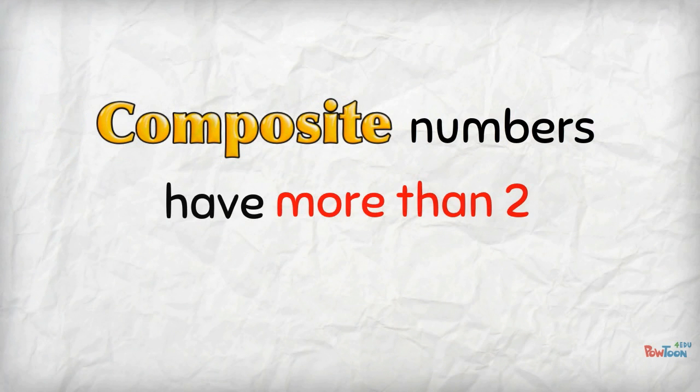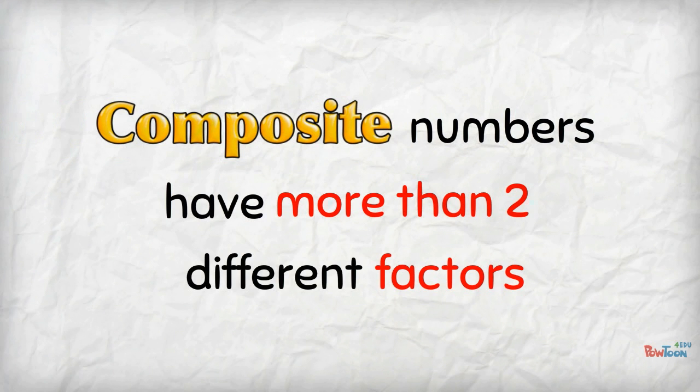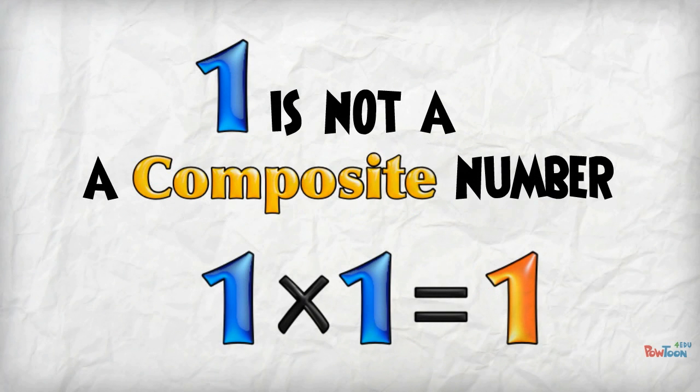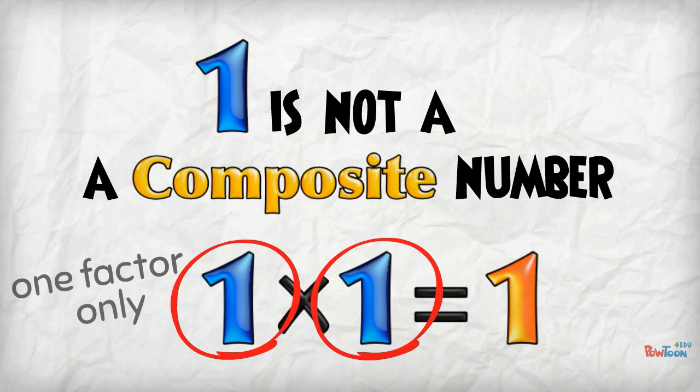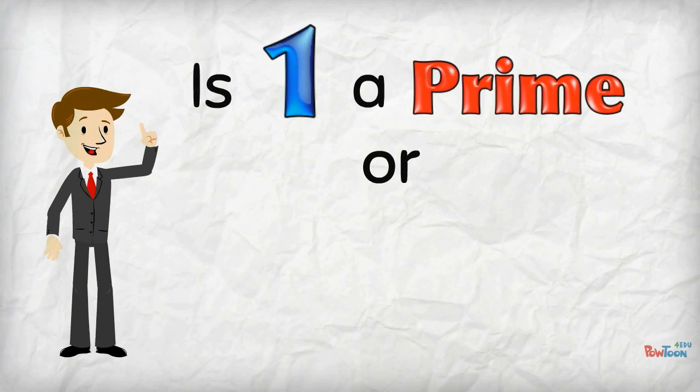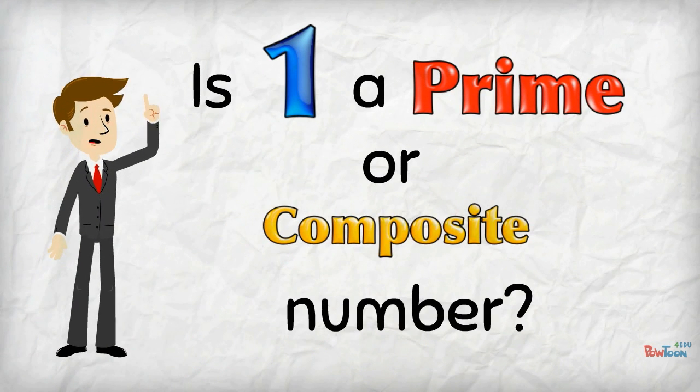Composite numbers must have more than two different factors. 1 is not a composite number either, because the number 1 has only one factor: 1 itself. So if your teacher asks you, is 1 a prime number or a composite number?